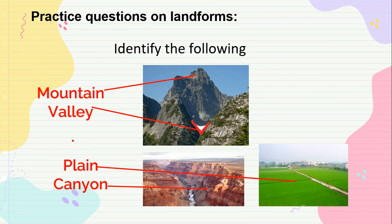Here are some practice questions: Can you identify the features? The tall triangular shape is a mountain. The V-shape is a valley. The flat land is a plain. The U-shape is a canyon.